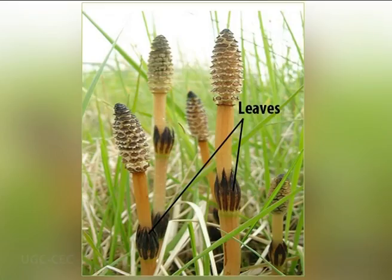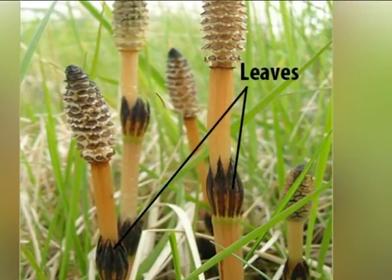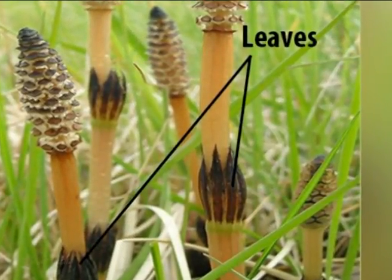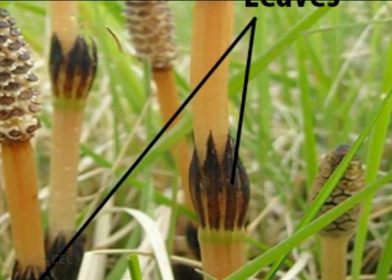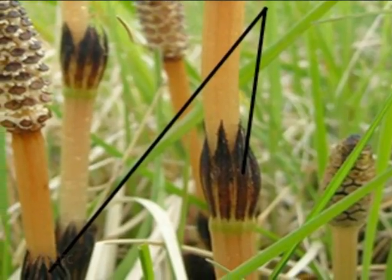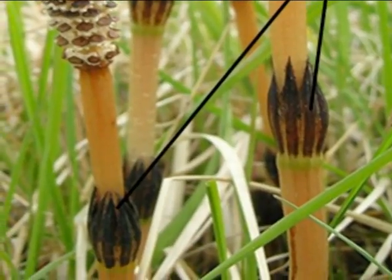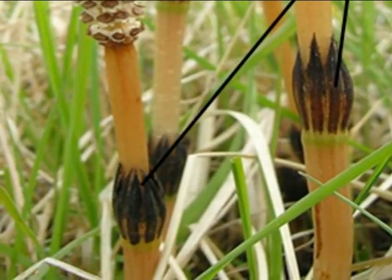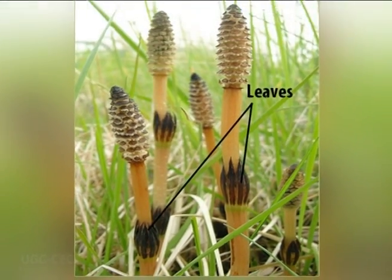Now we will discuss the leaves of Equisetum. The leaves of Equisetum are minute, scaly, and isophyllous. They arise in whorls at the nodes of both the underground rhizome and aerial branches. These leaves are fused at their bases to form a distinct sheath, and their distal free ends give a frill-like appearance. The leaves of Equisetum are non-photosynthetic, and their main function is to protect the branch bud at their node.